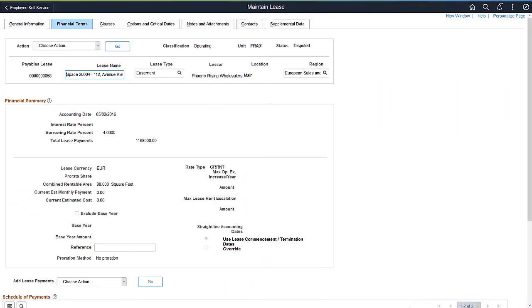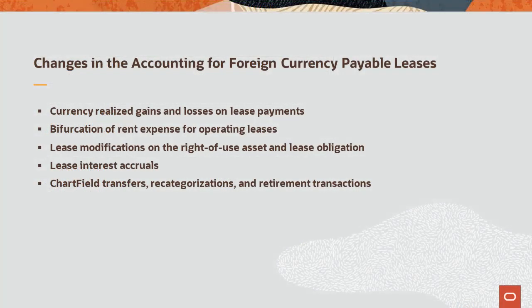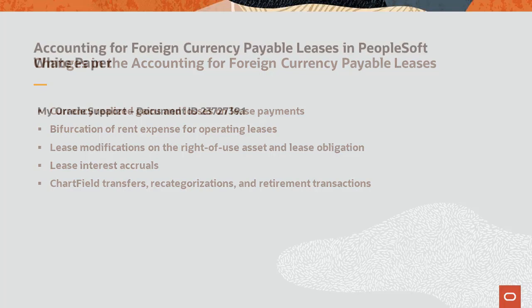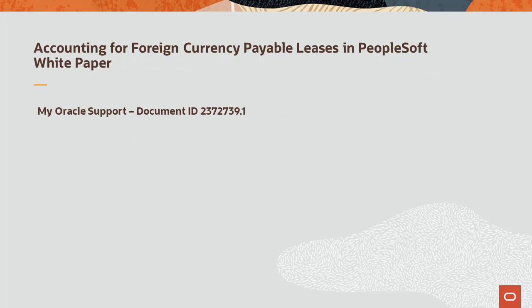PeopleSoft Lease Administration enhances the Accounting for Foreign Currency Payables Leases. This enhancement affects the accounting of currency-realized gains and losses on lease payments, bifurcation of rent expense for operating leases, lease modifications re-measuring the right-of-use asset and lease obligation, lease interest accruals, and chartfield transfers, recategorizations, and retirement transactions. For details about foreign currency accounting on payables leases, see the Accounting for Foreign Currency Payable Leases in PeopleSoft white paper on My Oracle Support document ID 2372739.1.